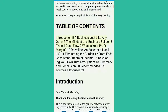Table of Contents: Introduction 5, A Business Just Like Any Other 7, The Mindset of a Business Builder 8, Typical Cash Flow 9, What Is Your Profit Margin? 10, Downline: An Asset or Liability 11, Eliminating the Burden 12, Front End Consistent Stream of Income 16, Developing Your Own Turnkey System 18, Summary and Conclusion 20, Recommended Resources Plus Bonuses 21.